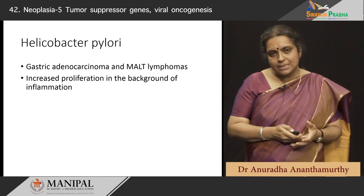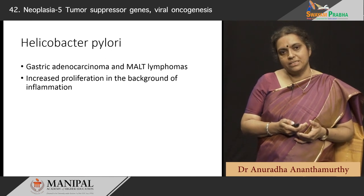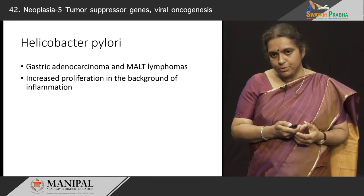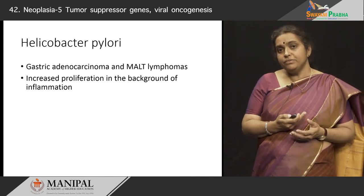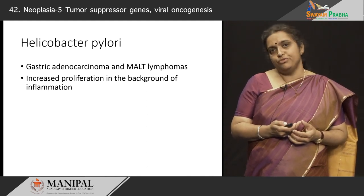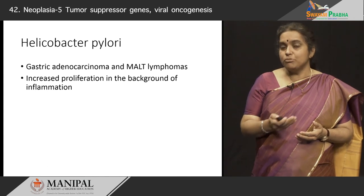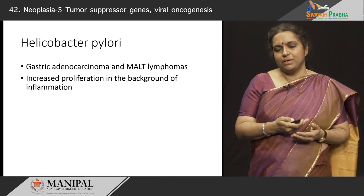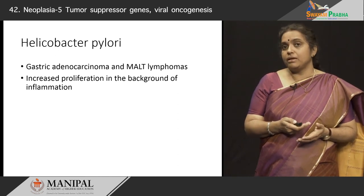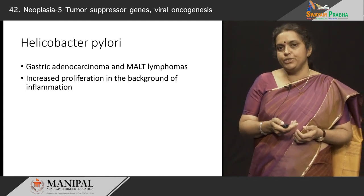Very interestingly, it is not just viruses that cause cancer. We now know that there are some bacteria implicated in carcinogenesis. One of the most important is Helicobacter pylori, which inhabits the gastric mucosa and has been implicated in different types of gastric neoplasms — both gastric adenocarcinomas and a kind of lymphoma that occurs in the stomach called MALT lymphoma. The pathogenesis is somewhat similar to what we saw with hepatitis viruses: there is increased proliferation of cells in the background of inflammation, with no oncoproteins per se involved in the carcinogenesis process.